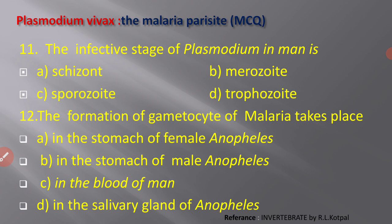Next MCQ: the infective stage of Plasmodium in man is? Options: A) schizont, B) merozoite, C) sporozoite, D) trophozoite. The infective stage by which a healthy person gets the infection of malaria is the sporozoite. A number of sporozoites enter into the body of the human being via the mosquito bite — whenever the mosquito takes blood from a healthy person, the parasite is introduced in the form of sporozoite.